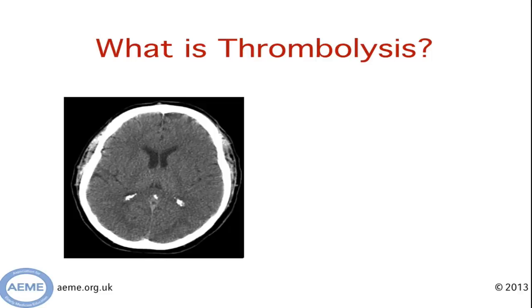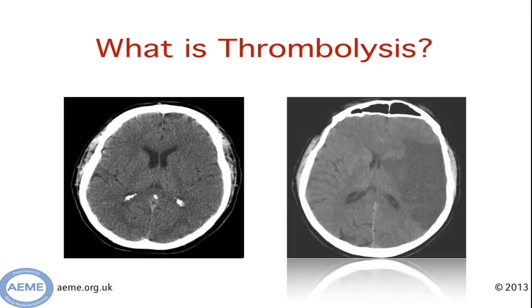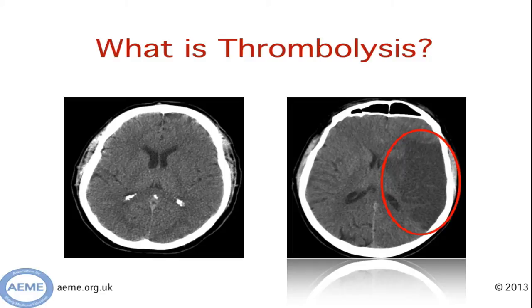It's important to remember that stroke is a clinical diagnosis, not a radiological one. Often if you scan somebody in the early stages of an ischemic stroke, you'll see a relatively normal looking scan. On the right hand side of the screen here, you can see a scan of somebody who's had a large infarct — this is what we're trying to prevent with the treatment. If you see this, it means that area of brain is unsalvageable and the patient isn't going to get any benefit from the treatment.